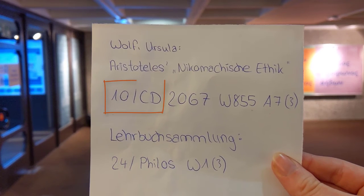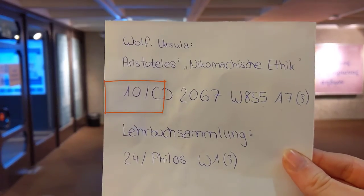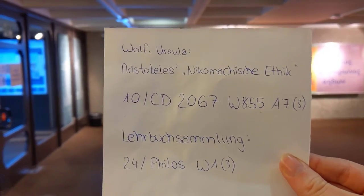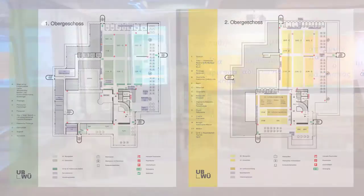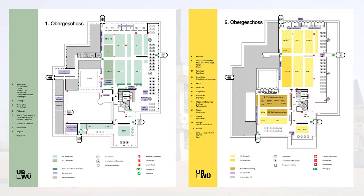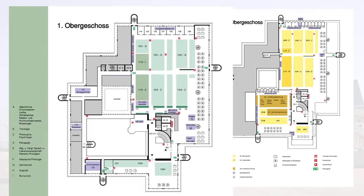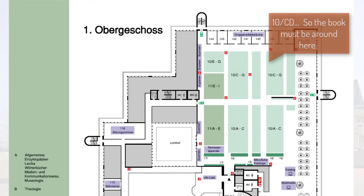The beginning of the shelfmark represents the floor: 10 for the first floor, and 20 or 24 for the second floor. You can check the maps in the stairway to find out where the book is located approximately.